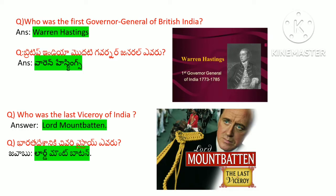Who was the first governor general of British India? The answer is Warren Hastings. Warren Hastings was the first governor general of British India, appointed under the 1773 Regulating Act as Bengal governor, and became the first governor general of British India.